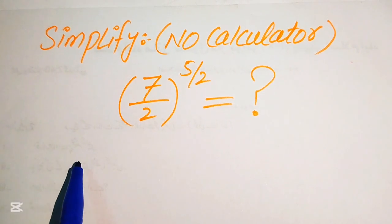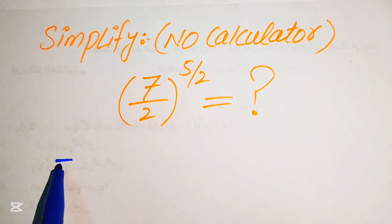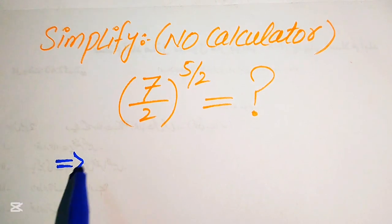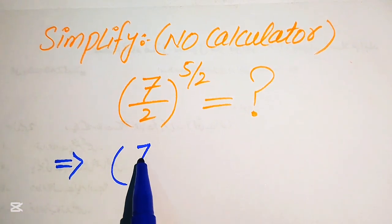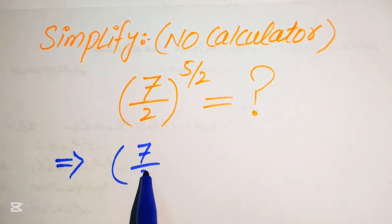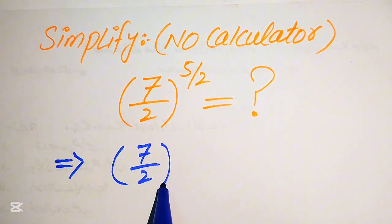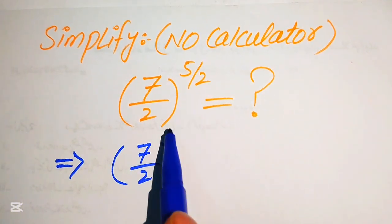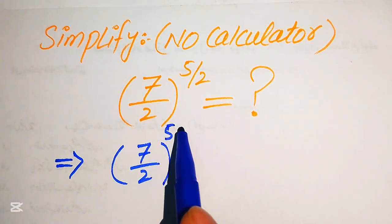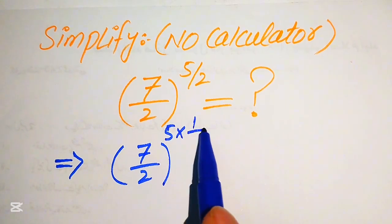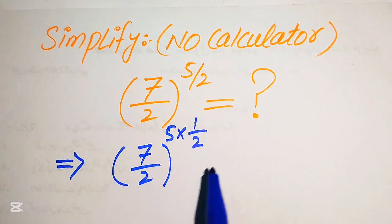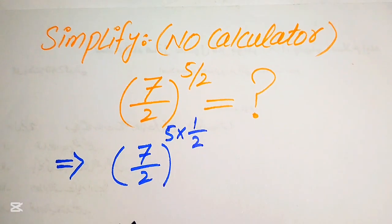The very first step is to break this exponent. We write the exponent of 7 over 2 — which is 5 over 2 — as 5 multiplied by 1 over 2.